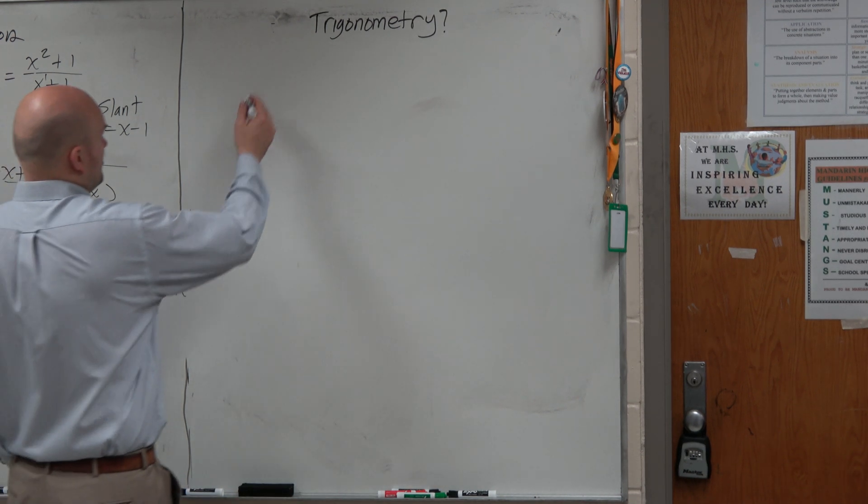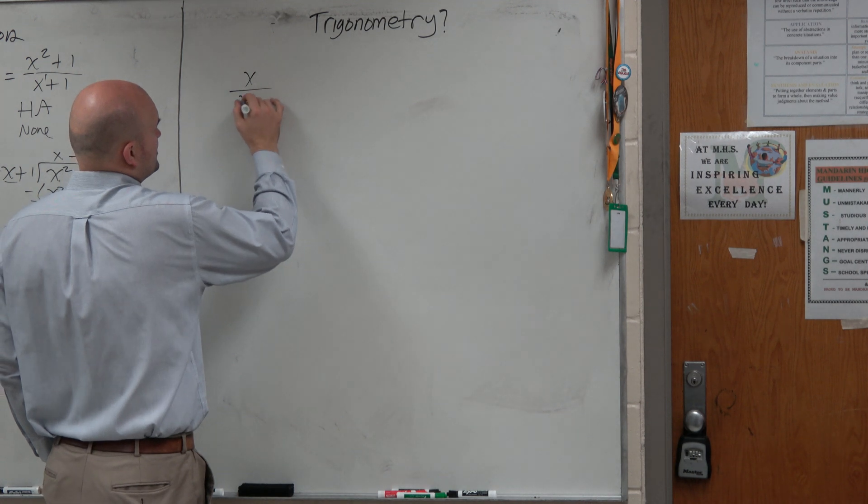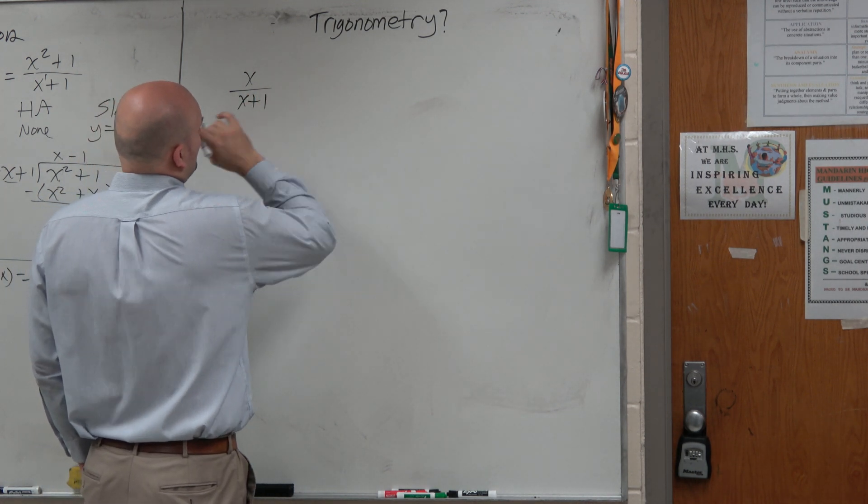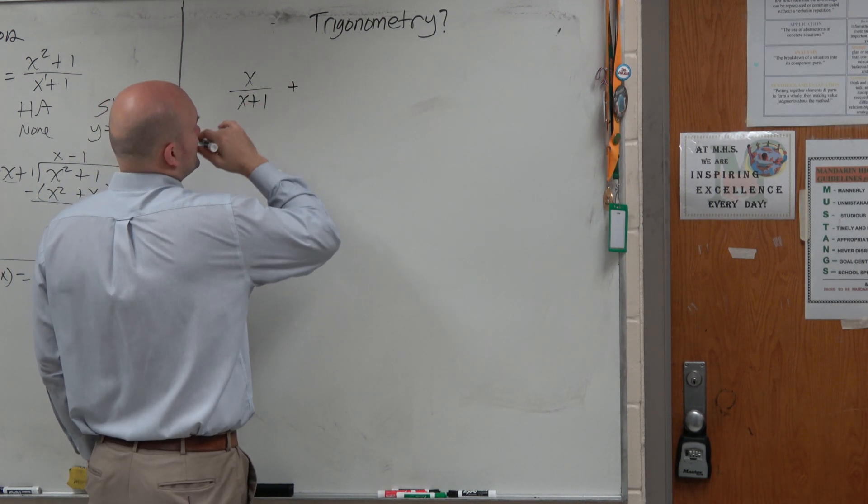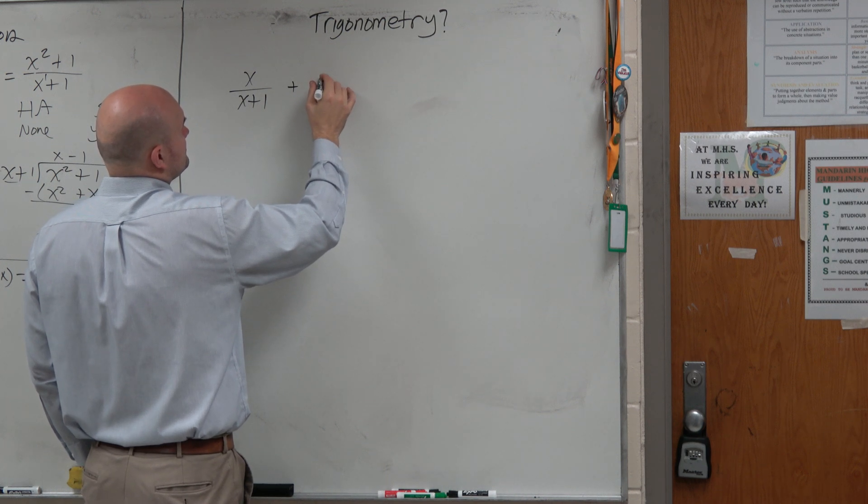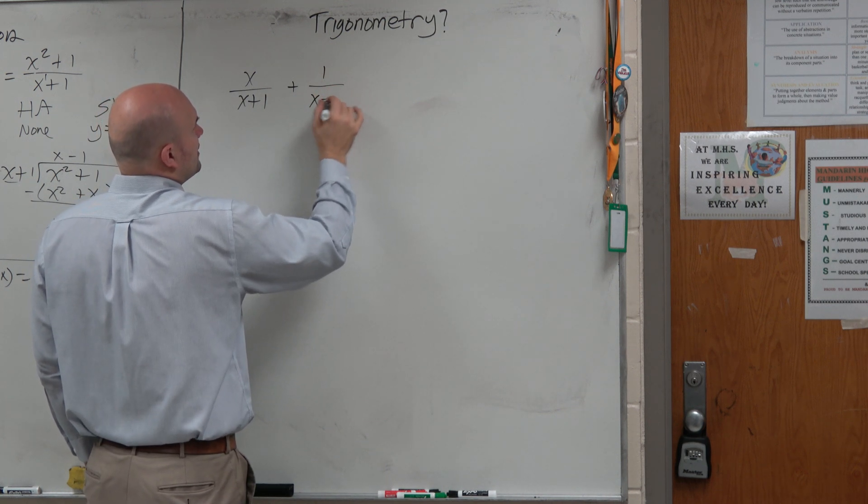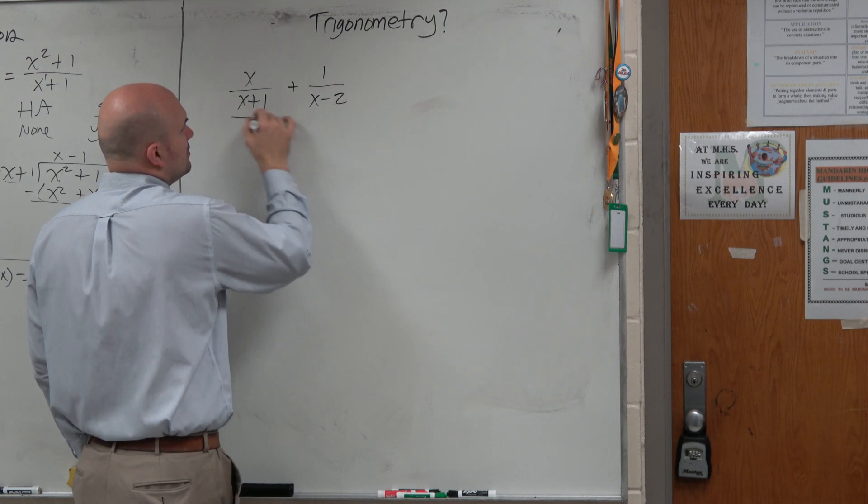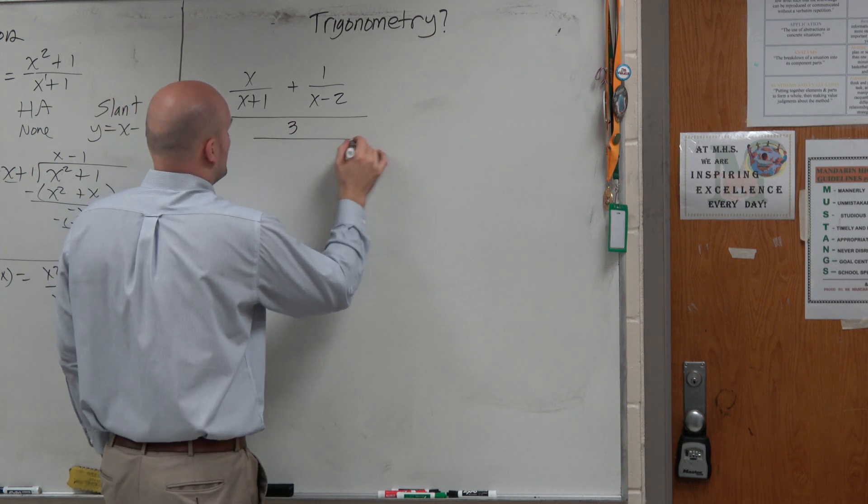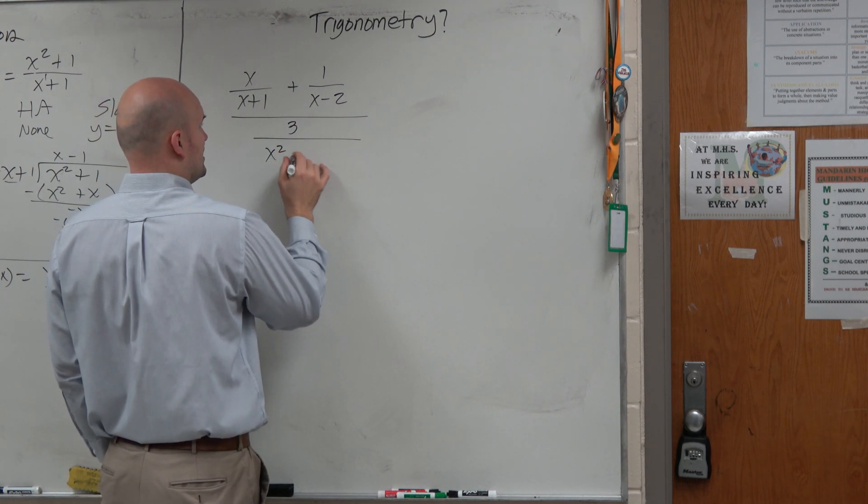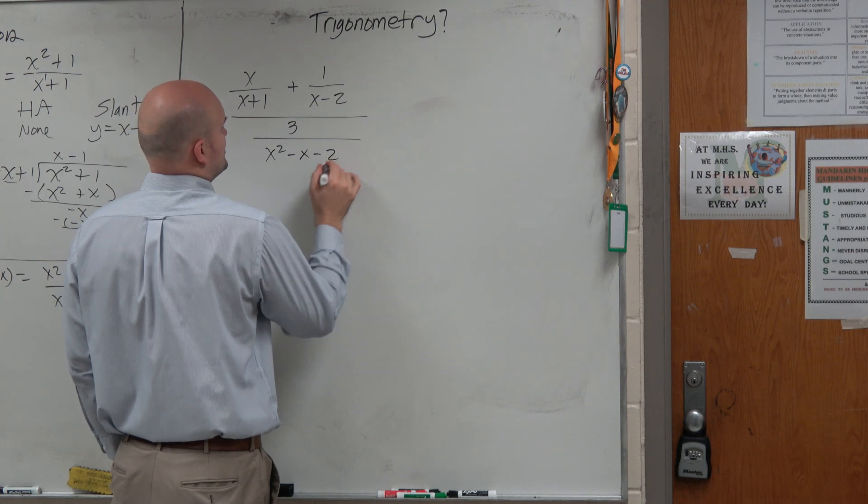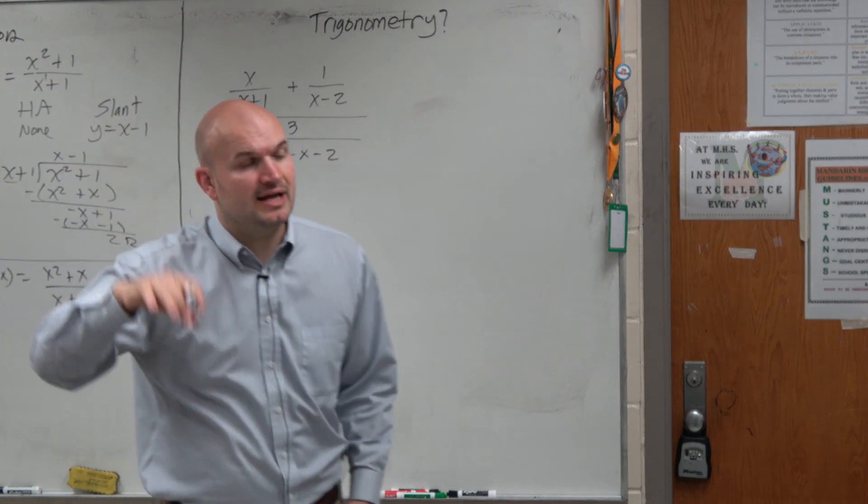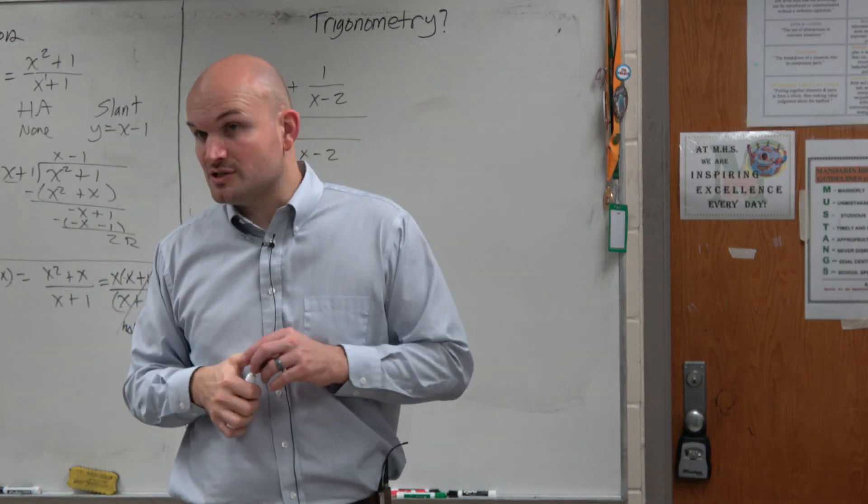So let's cover a general problem here. x over x plus 1 plus 1 over x minus 2 divided by 3 over x squared minus x minus 2.